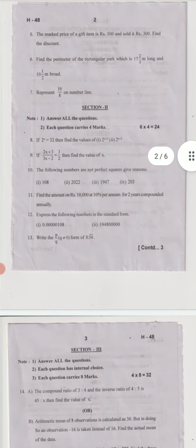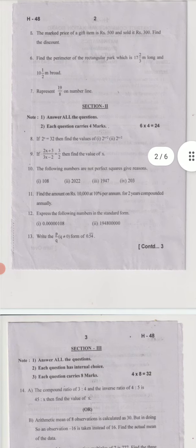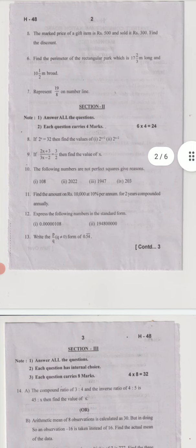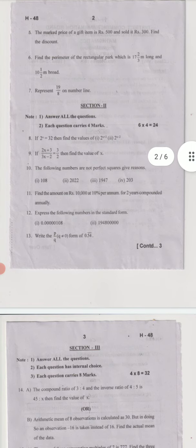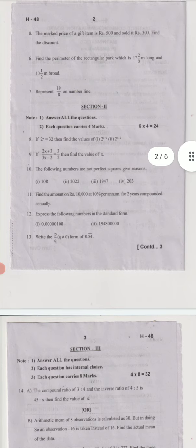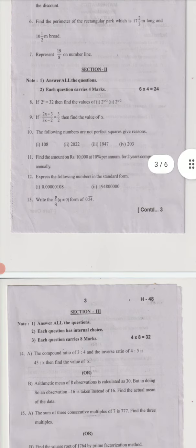We should answer all the questions. Each question carries four marks. Tenth question: the following numbers are not perfect squares, give reasons. Find the amount. Eleventh question: 10,000 rupees at 10% per annum for two years compounded annually.